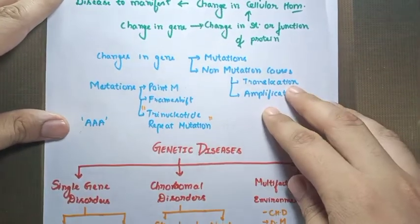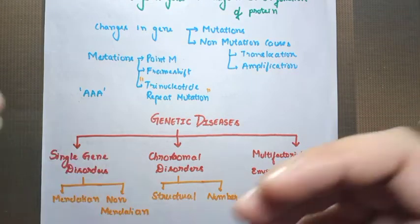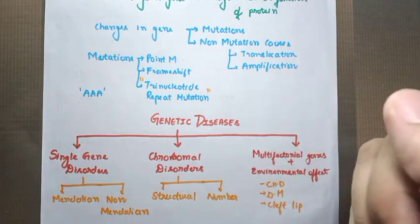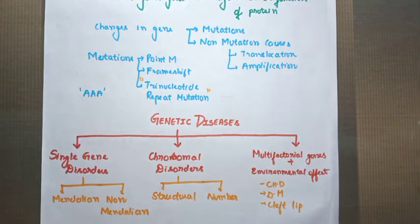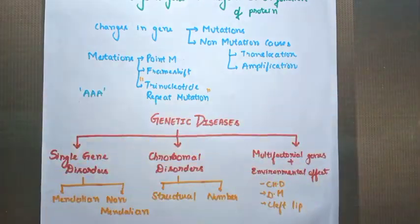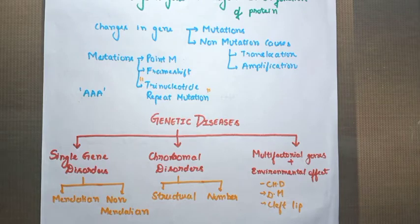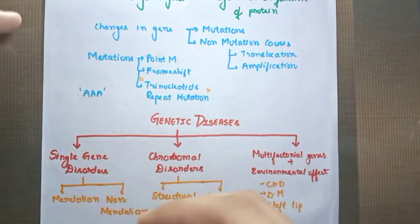Now, depending upon how the changes may arise, we divide genetic diseases into three categories. The first one is a single gene disorder, occurring due to change in a single gene. The second is a chromosomal disorder — change in the structure or the number of chromosomes. The third is multifactorial genes, meaning more than one gene is responsible for a particular disease to manifest, along with environmental factors that differ from person to person, like chronic heart disease, diabetes mellitus, and cleft lip.